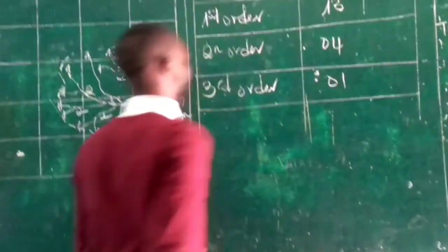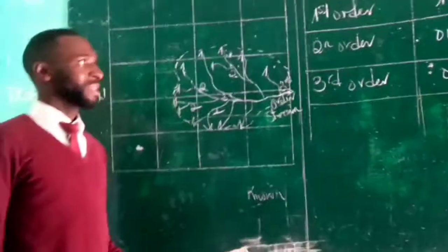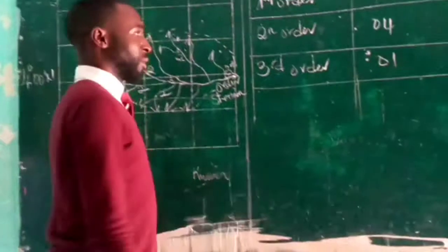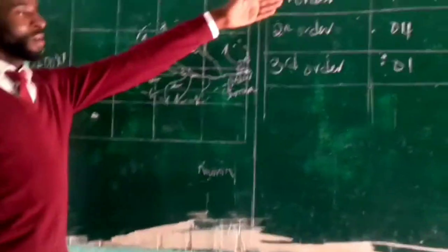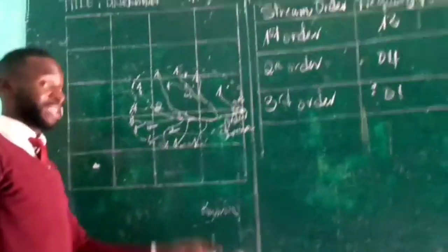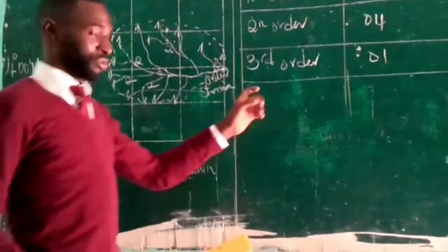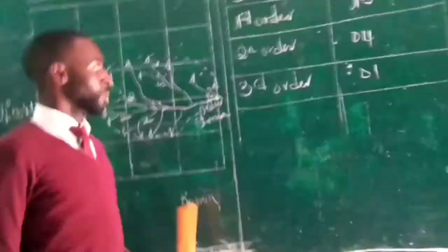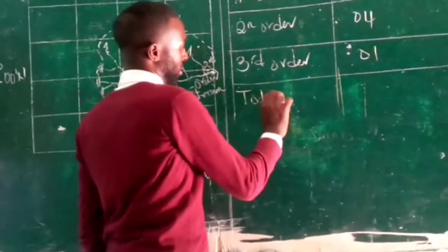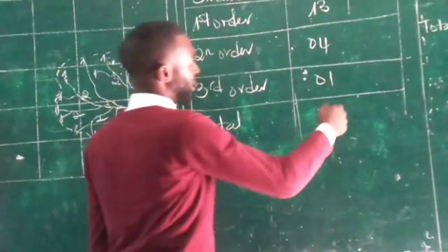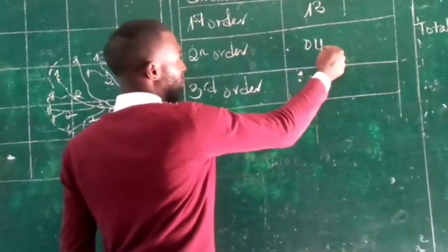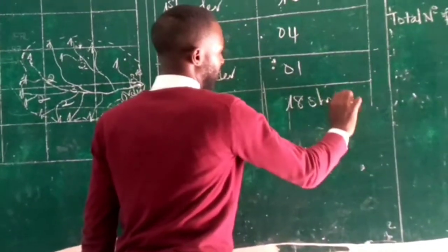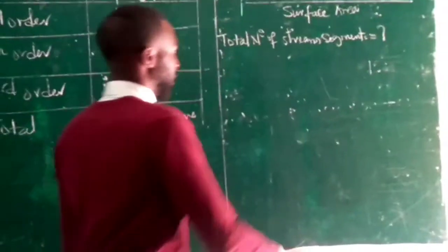We are only going to have a third order here — we don't need a fourth-order stream because our formula only requires the total number of stream segments divided by surface area. The total number of stream segments is: 13 first-order plus 4 second-order plus 1 third-order, giving us 18 streams in total.